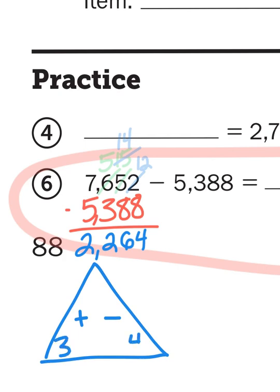Okay, I can add these two numbers together to check to see if my answer is right. So 5,388 plus 2,264.